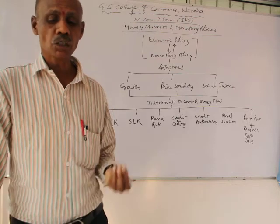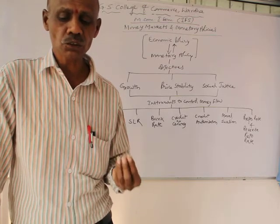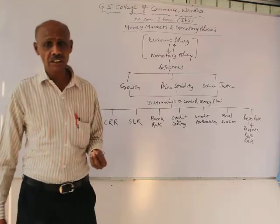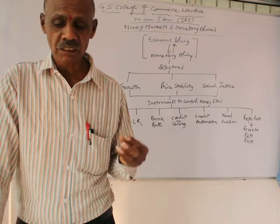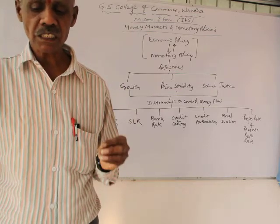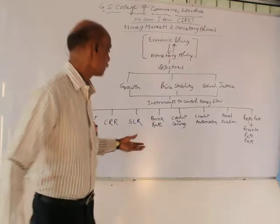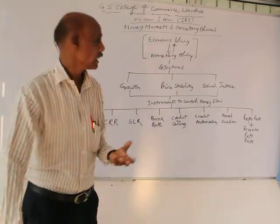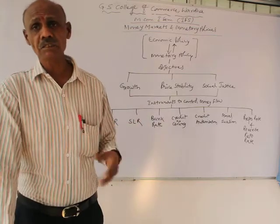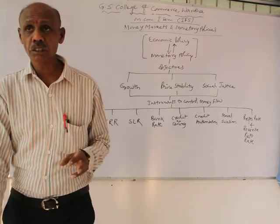The next one is moral suasion. Moral suasion is nothing but a request by the Reserve Bank of India to the commercial banks to take certain measures as per the trends in the economy. The RBI gives moral suasion to commercial banks to help in the management of funds. The RBI may request commercial banks not to give loans for unproductive purposes which do not add to economic growth but increase inflation. As part of the overall monetary policy implementation and regulation of demand and supply of funds, the RBI gives advice and suggestions from time to time to commercial banks so that the flow of money is controlled effectively.